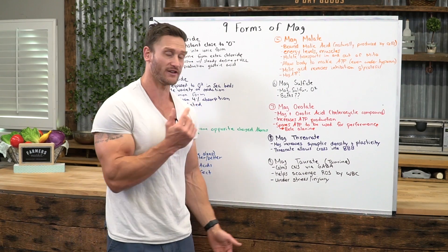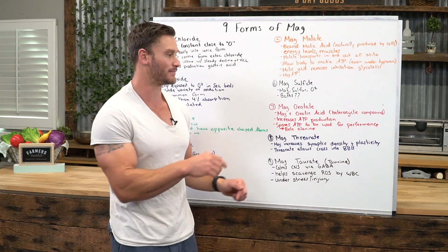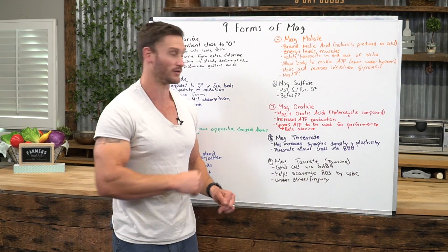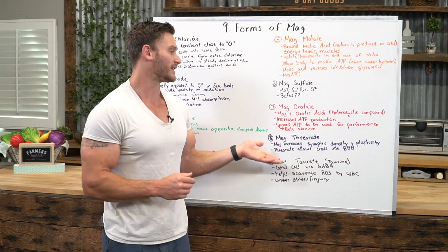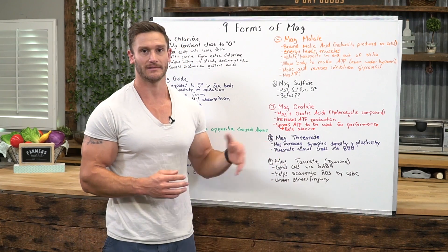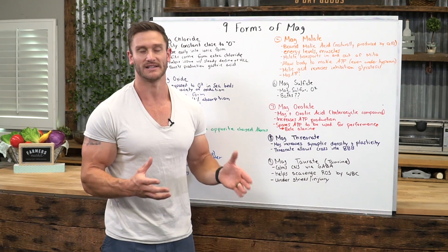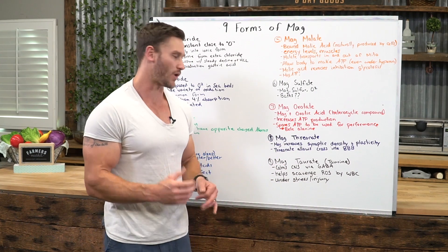If it's bound with threonate, it can get into the brain — it allows it to get through that blood-brain barrier. Jigsaw has their brain boost product, which is in that bundle too, but you can get mag threonate in a lot of places. You just have to make sure you're getting a good quality one.